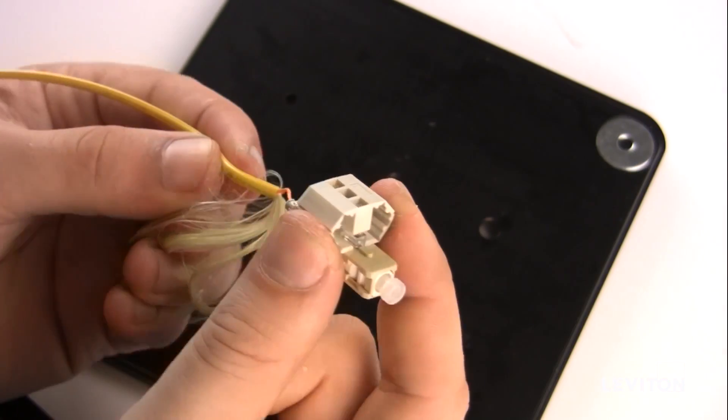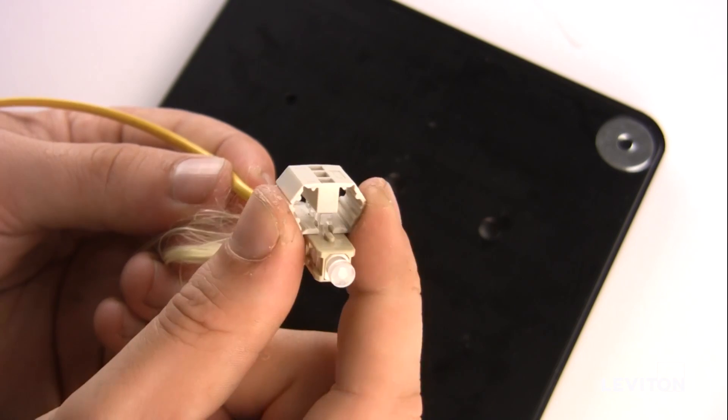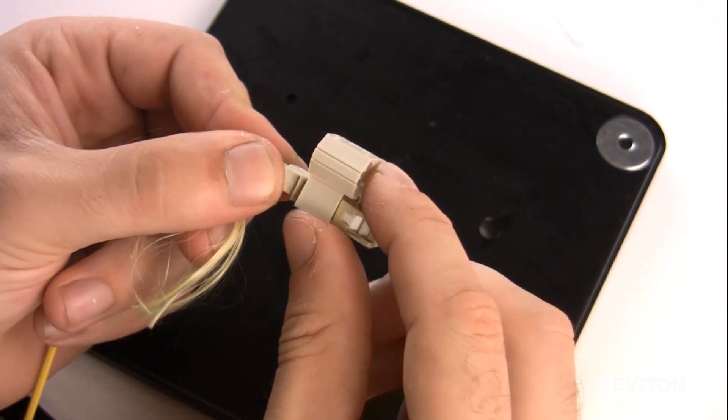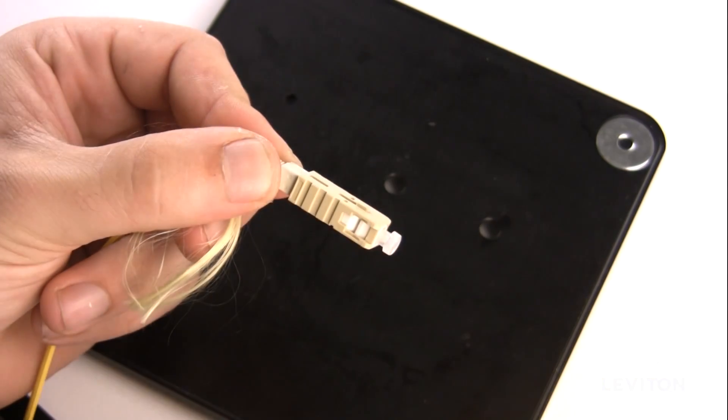Maintaining a slight force on the fiber, release the wedge clip by squeezing both sides until the wedge clip dislocates itself from the connector body. Remove the wedge clip from the connector.